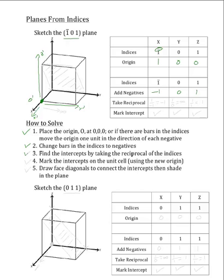The next step is to take the reciprocals of these indices in order to find the intercepts. We will take 1 over our x-index, which is negative 1, and that will give us our x' intercept of negative 1. We will take 1 over our y-index, which is 0, and that will give us our y' intercept of infinity. And finally, we will take 1 over our z-index, which is 1, and that will give us our z' intercept of 1.